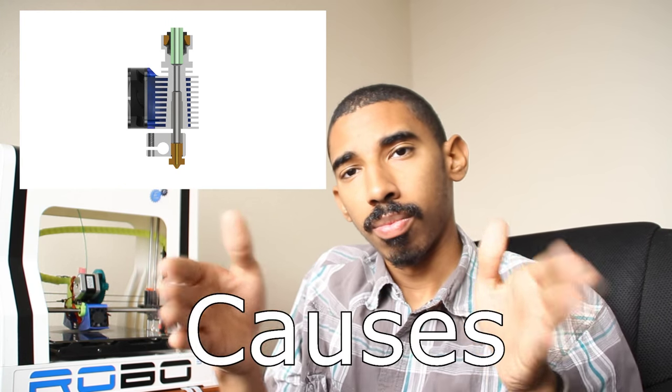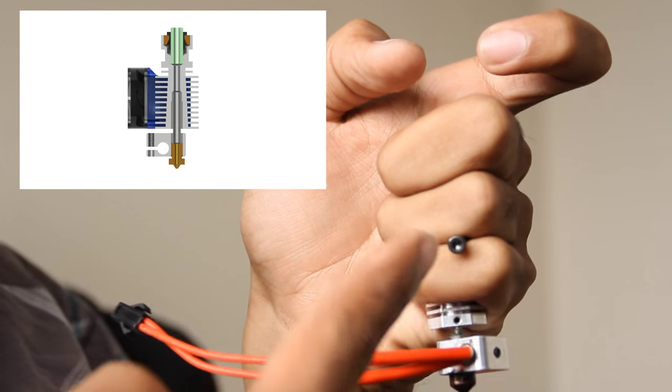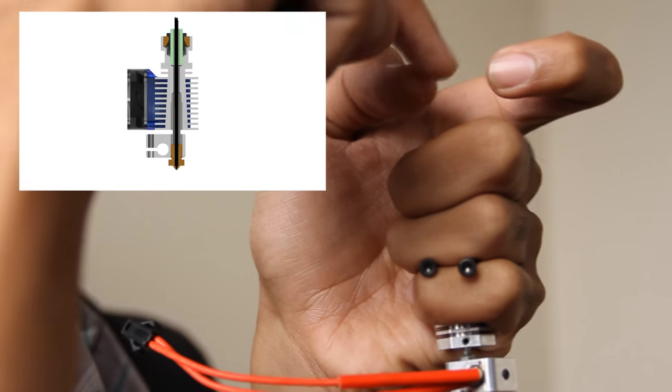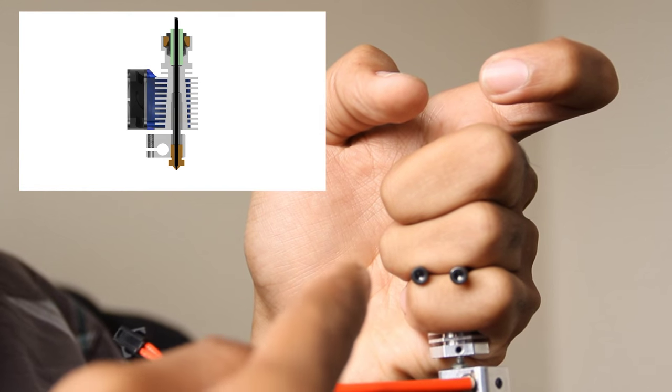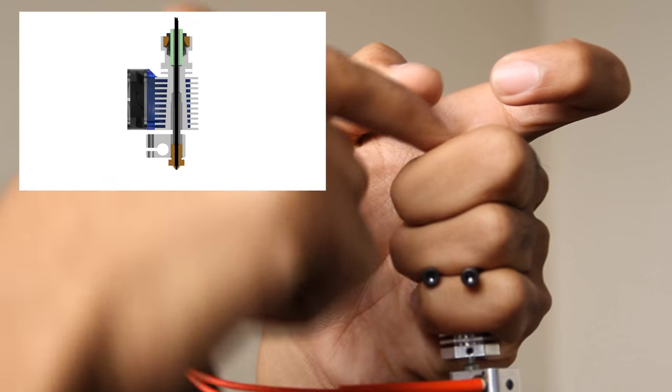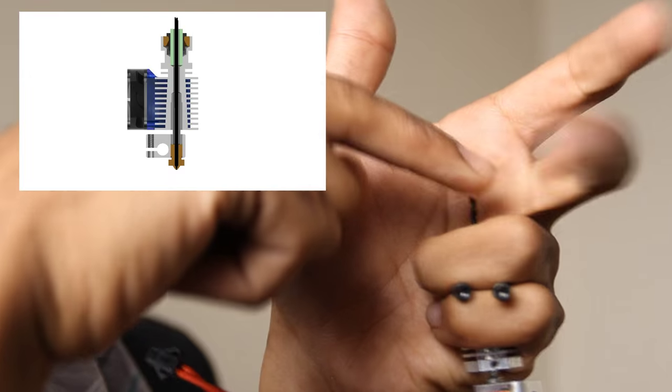So let's move on to the second step, causes. Let me go back to my hand analogy for a second. If you break filament off when removing or installing new filament, you're going to have a jam inside of the extruder carriage.